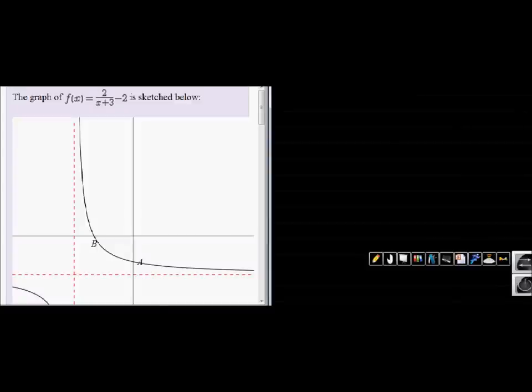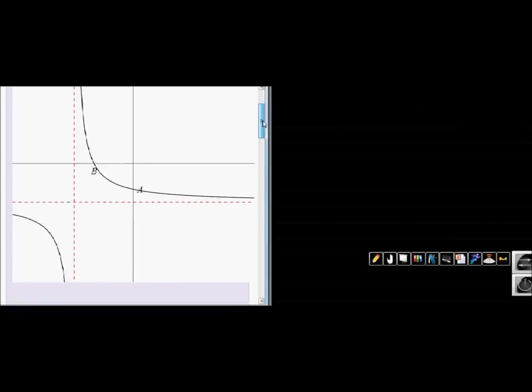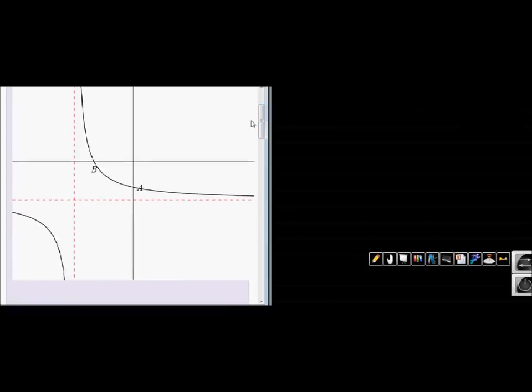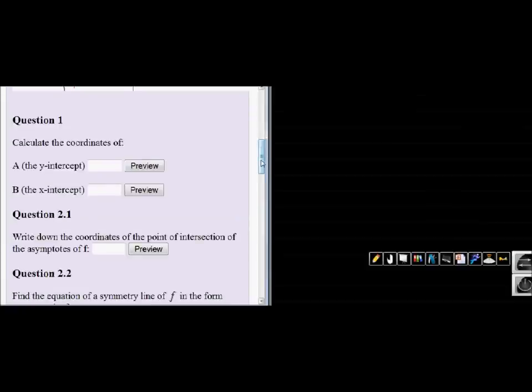In this question, the graph of f(x) is given, where f(x) = 2/(x+3) - 2, and the sketch is shown below. On the sketch, we can see that a is the y-intercept and b is the x-intercept.